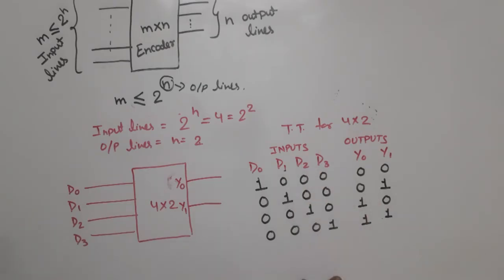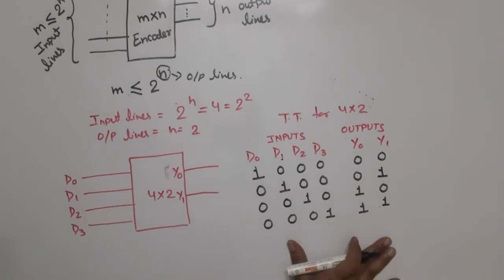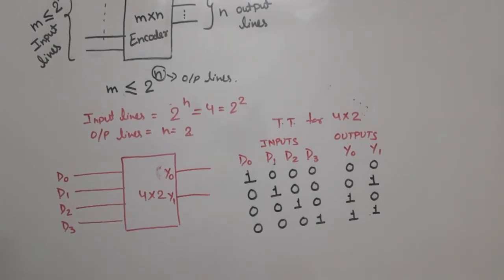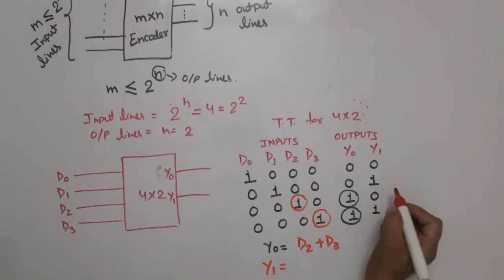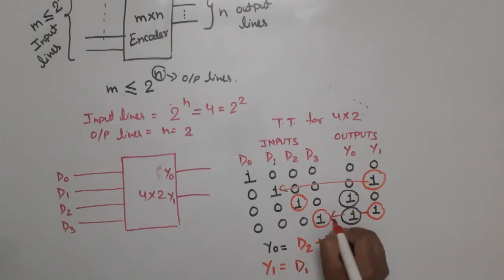From this truth table, Y0 is high in these combinations where corresponding inputs are D2 high and D3 high, so Y0 = D2 + D3. Similarly, Y1 = D1 + D3.